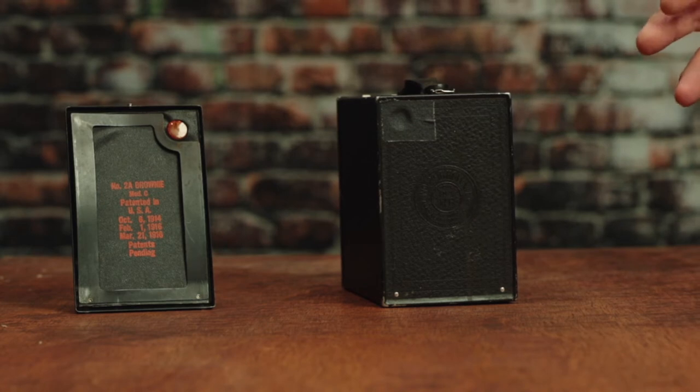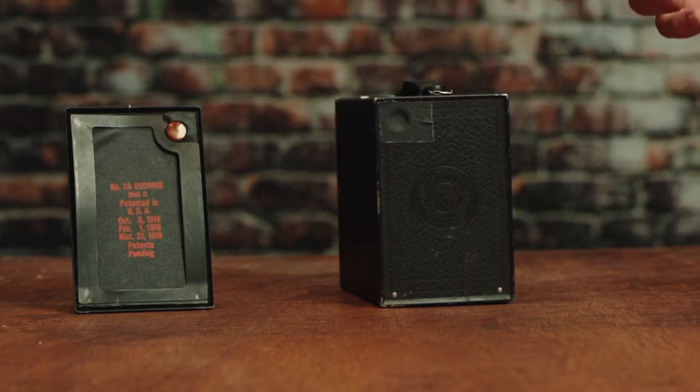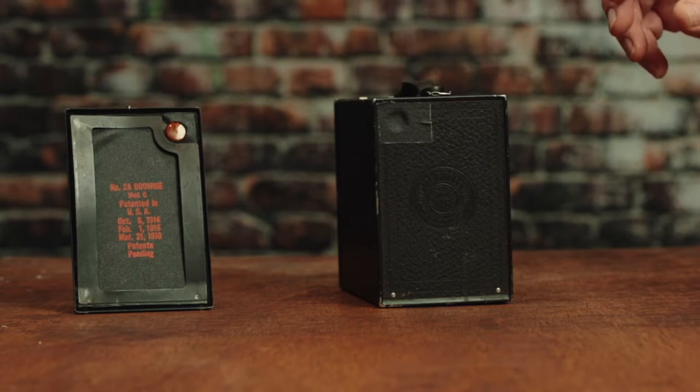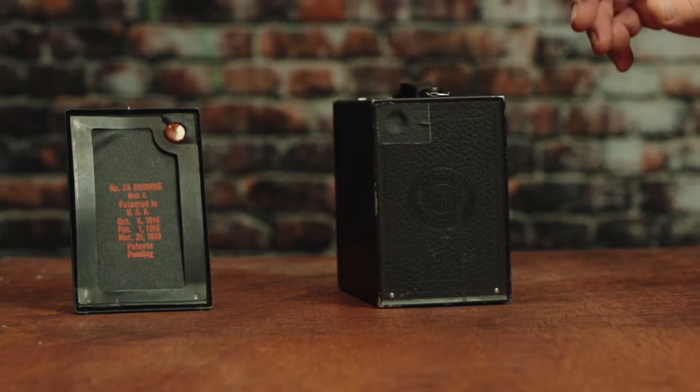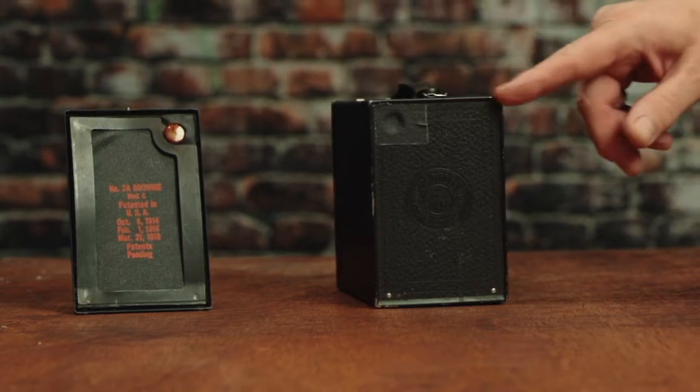Well, none of those numbers exist on current film. They don't make the 116 roll film anymore. And so just to avoid light leaking into this camera, I just tape over this.